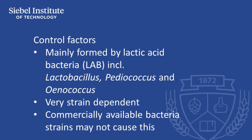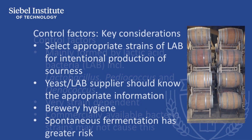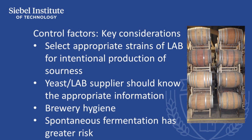This underscores the importance of checking with suppliers for the characteristics of strains with respect to the production of this compound. When selecting microbial strains for intentional use in brewing, brewers must choose strains that have been tested to show they lack the specific enzymes that catalyze production of cadaverine and other biogenic amines. The supplier of the strain should have tested their culture collection to know if any of their strains can produce cadaverine or any other related byproducts.